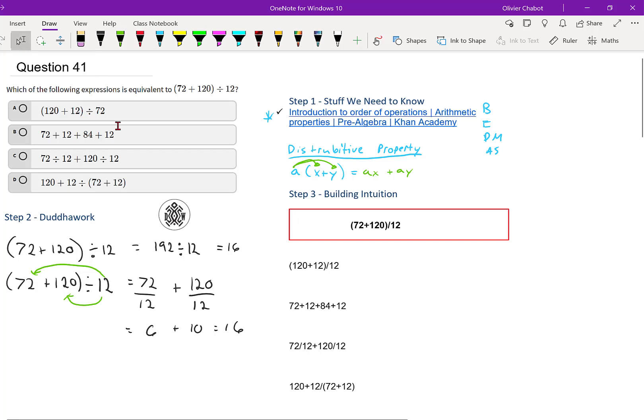So then we can look at different options. We have A, B, C, D, and we can see here that C is the 72 divided by 12, plus 120 divided by 12. So that's what I would do personally for this one.